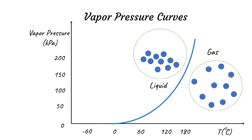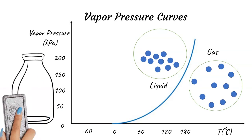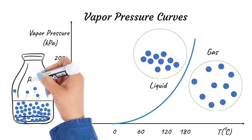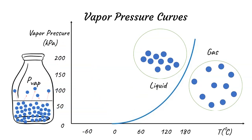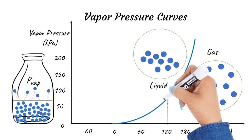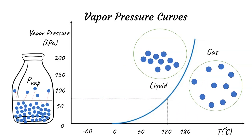We can cross this boundary to change the phase of the substance by changing the temperature or pressure. Vapor pressure is the equilibrium pressure of a vapor above its liquid, or solid, resulting from some molecules at the surface escaping into the gas phase. At any given temperature, we can determine the vapor pressure of a liquid using the vapor pressure curve.